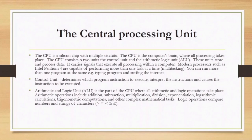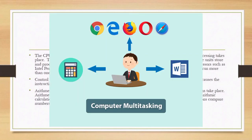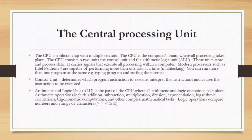Modern processors such as the Intel Pentium 4 and Core i7 are capable of performing more than one task at a time — for example, you can open a document while also listening to music and typing. Under the CPU, we have the control unit, which determines which program instruction to execute, interprets the instruction, and causes it to be executed.